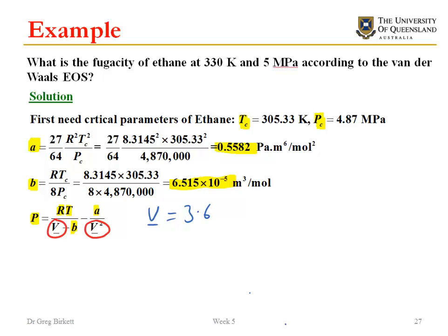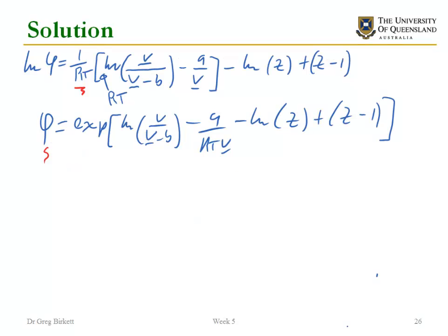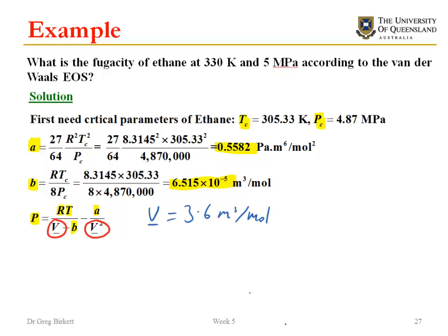Now to use this in the equation on the previous slide, we're wanting to use it in this equation here. Not only do we need to know V, which we use in a couple of spots, we also need to know what Z is equal to. If we go back to our definition of Z the compressibility, Z is equal to the real volume divided by the ideal gas volume. That's equal to pressure times the real volume divided by RT. P on RT is just the ideal gas volume. For this set of numbers then, the compressibility works out to be 0.656.